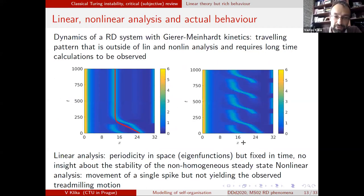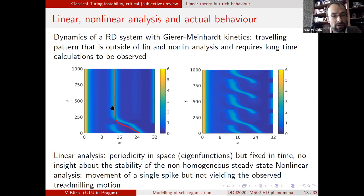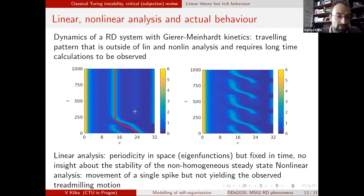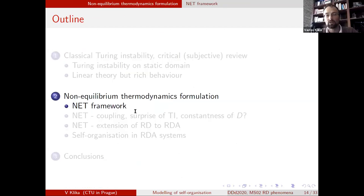Another example closely related to the first two talks concerns spike movement. Even in the well-studied Gierer-Meinhardt kinetics, very close to the shadow limit, we can have not only traveling spikes and stabilization as seen before, but if there is a very slight, shallow modulation of parameters across space, we can observe complex periodic motion that we were unable to understand through linear or nonlinear analysis similar to what was shown before.